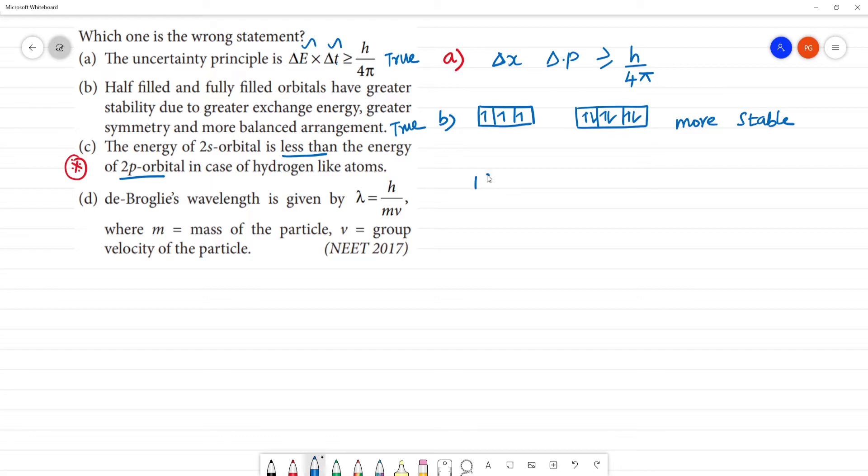Now, we can see the Hund's principle. What is the 1s? Greater energy is 2s. Greater energy is 2p. That is the 3s. But for hydrogen atom, hydrogen and hydrogen-like atoms, at the exception case,